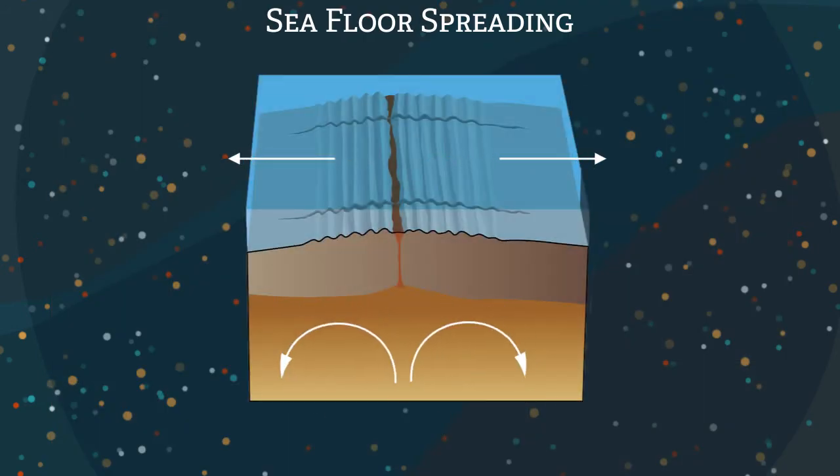Seafloor spreading is when two oceanic plates move apart and magma flows up from the mantle onto the ocean floor.